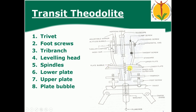The part which rests on the tripod is called the trivet. With the help of foot screws we level the upper part of the theodolite. The trivet, foot screws, and tri-branch together form a unit called the leveling head. The spindles are the inner and outer axes of the theodolite. The lower plate carries the main scale and the upper plate carries the vernier scale. The bubble on the upper plate is called the plate bubble.